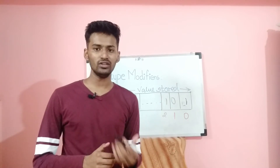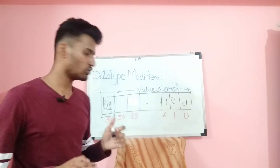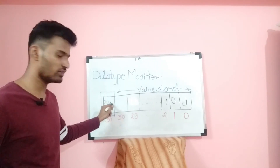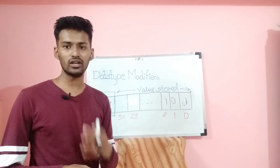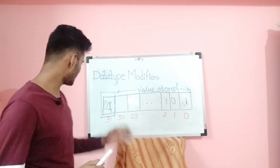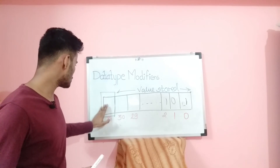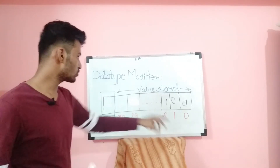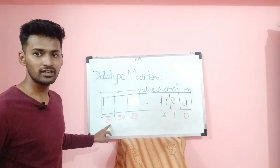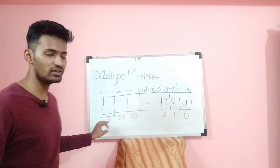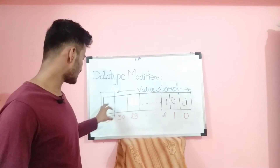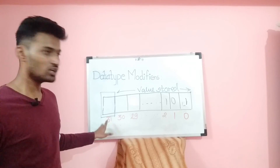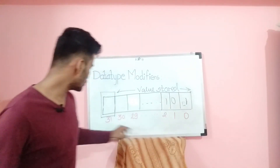When no modifier is used, by default it is signed, so the 31st bit changes to 0 or 1 depending on whether the number is positive or negative. When we write unsigned, it removes this bit's role as a distinguisher and allows the integer value to use all 32 bits for storing data. This is why the range changes from 0 to 2 raised to 32 minus 1, effectively doubling the usable positive range.